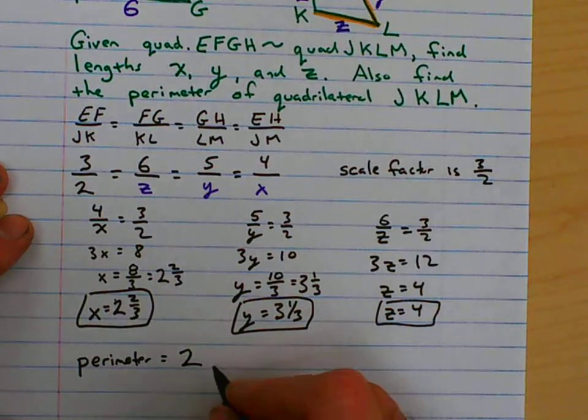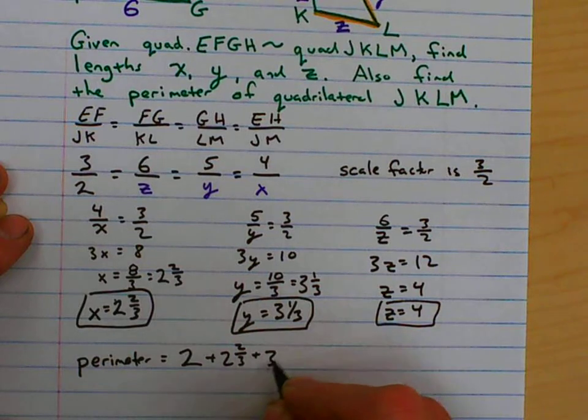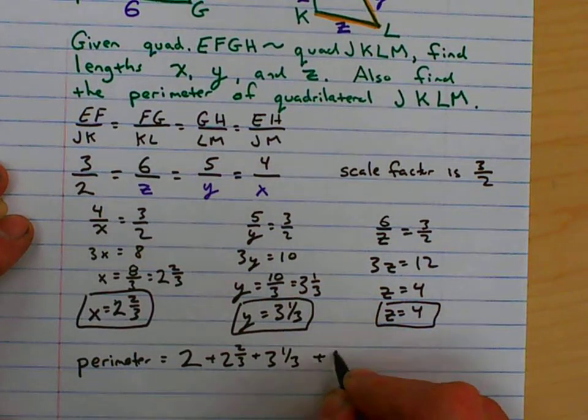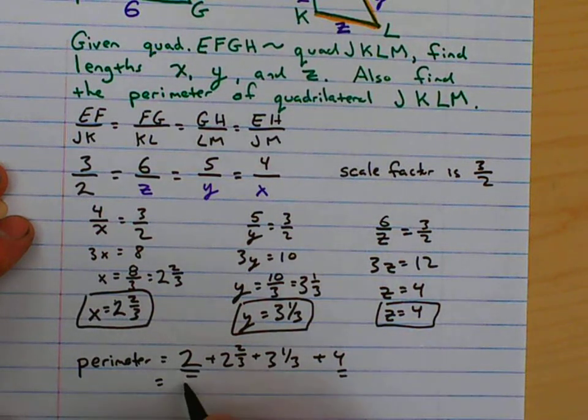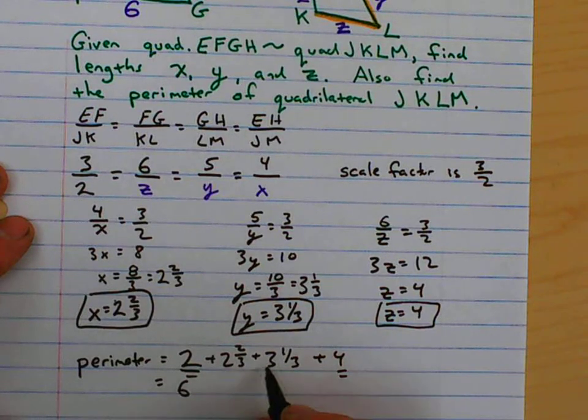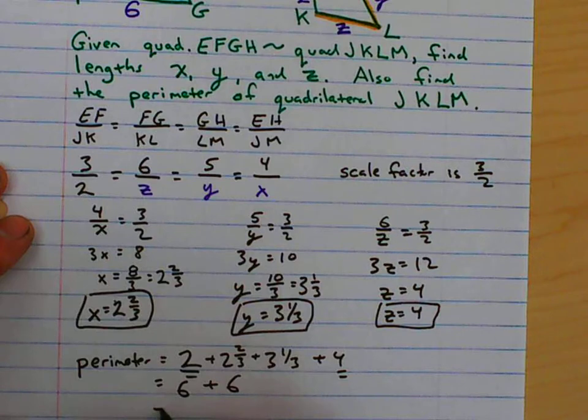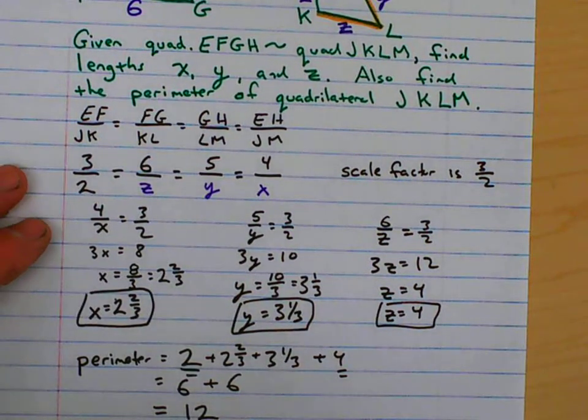The perimeter should equal 2 on the side that we already were given. And then x, y, z. 2 and 2 thirds. 3 and a third. And 4. 2 and 4 make 6. I'm going to add those together. And then this is 5 plus 1 is 6. So you end up with 12. 12 is your perimeter.